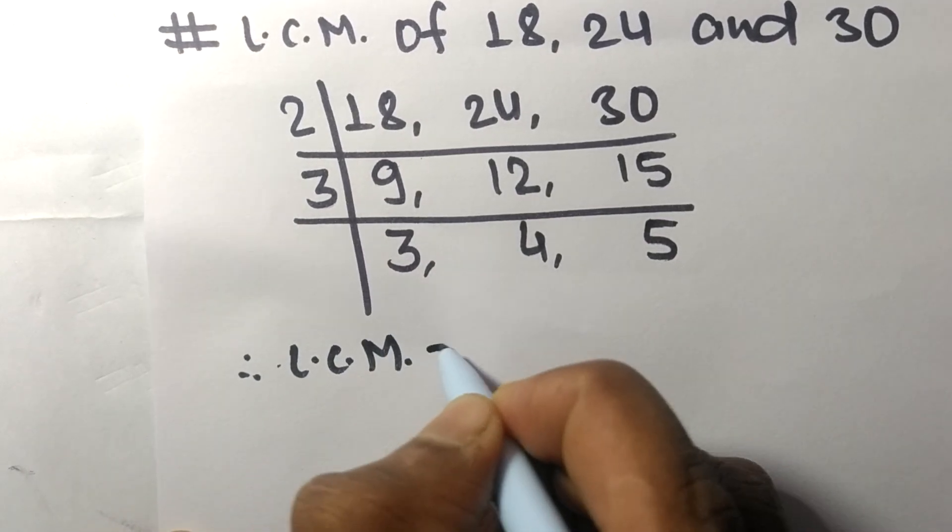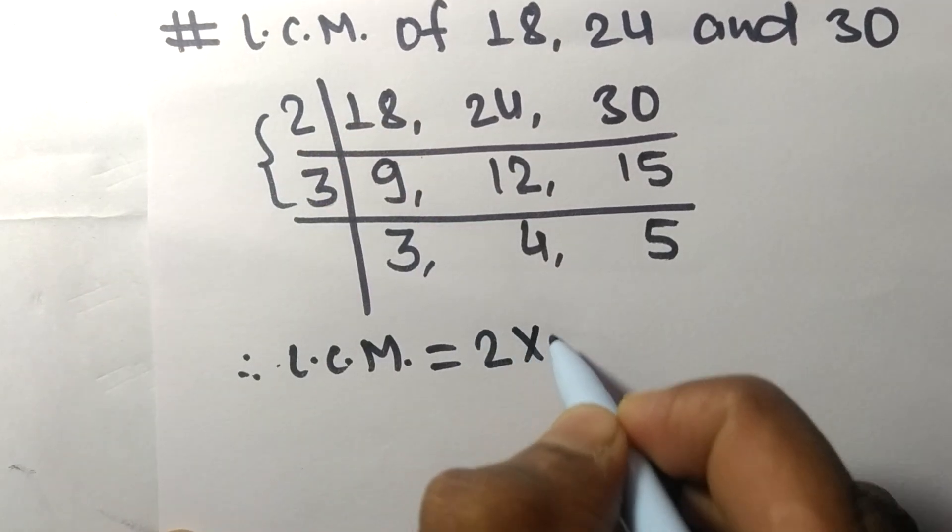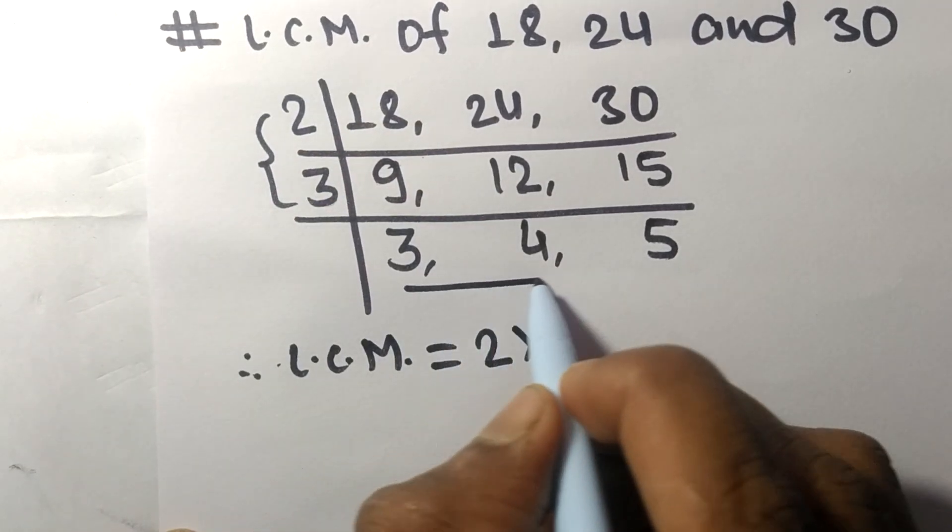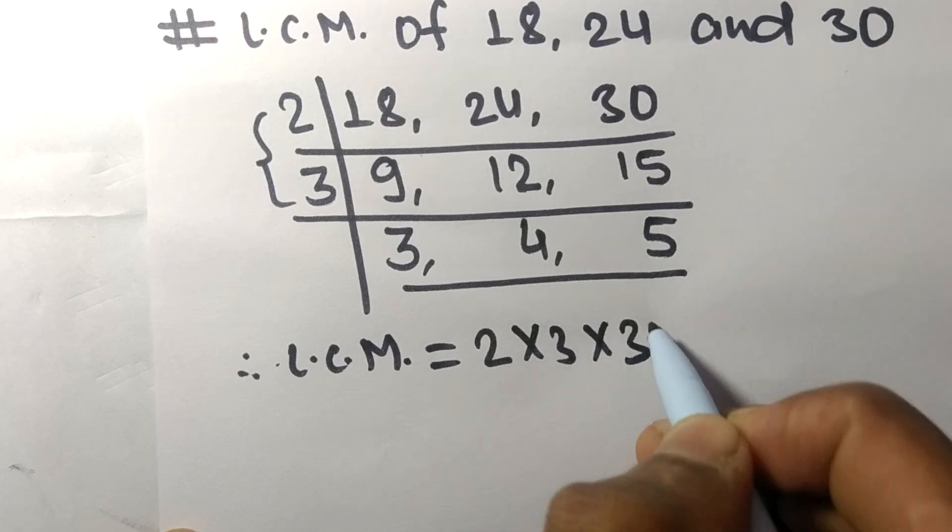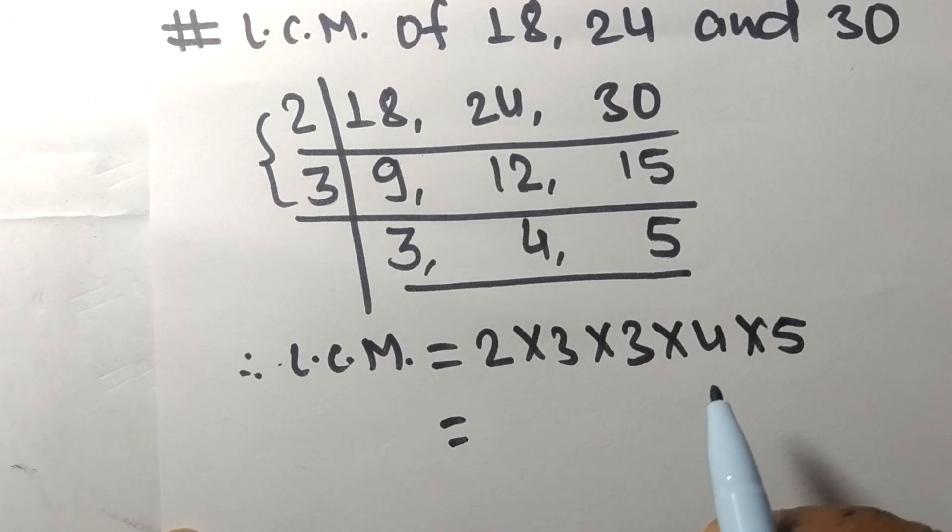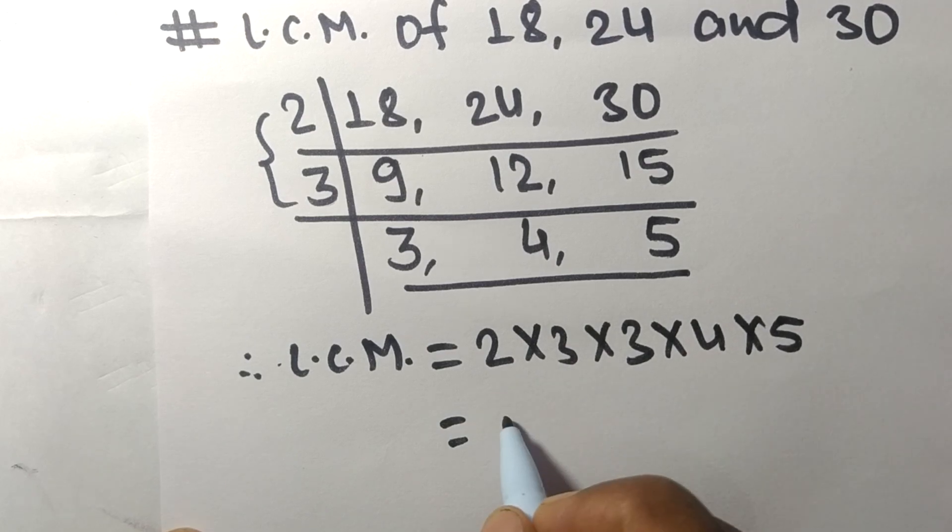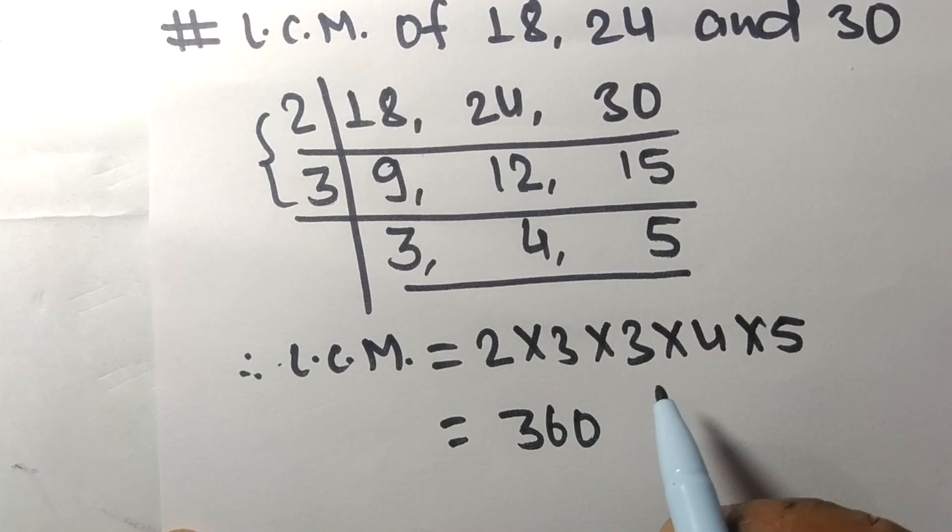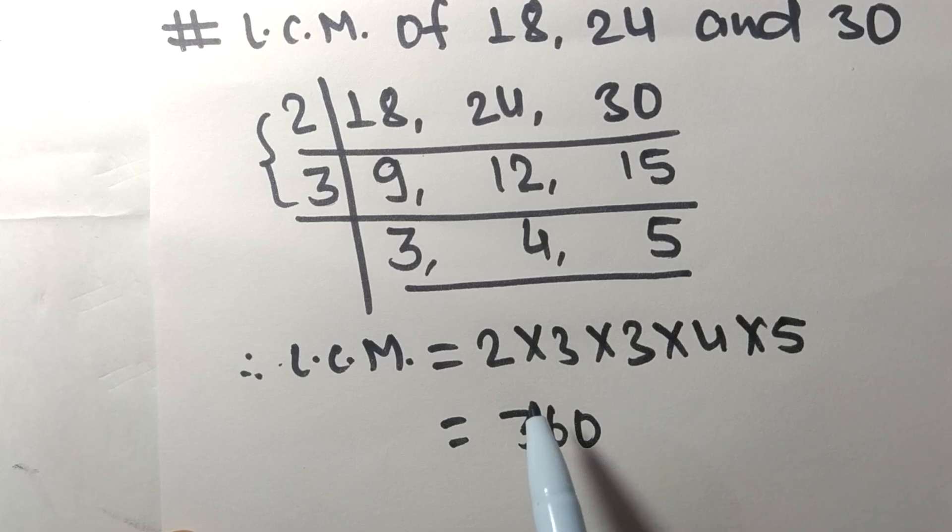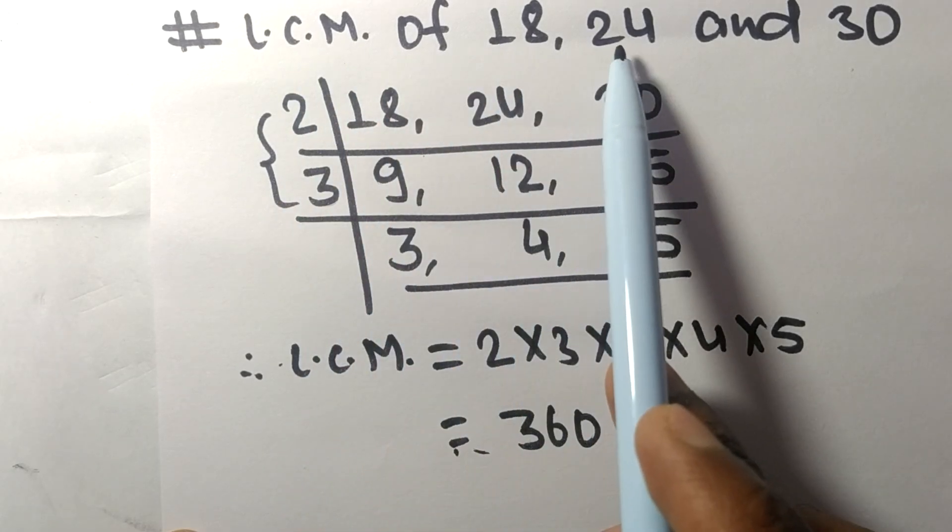The LCM is equal to, from this side it is 2 times 3, and from this side it is 3 times 4 times 5. By multiplying all these numbers we get 360. So 360 is the LCM of 18, 24, and 30.